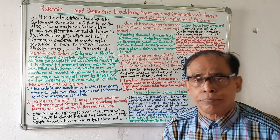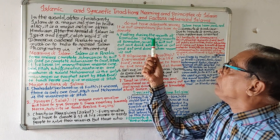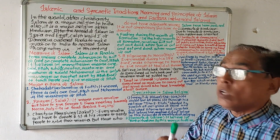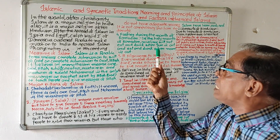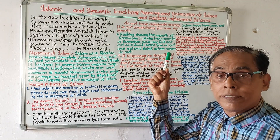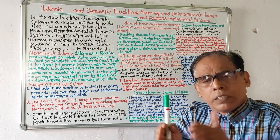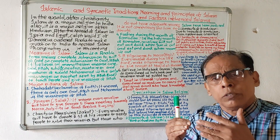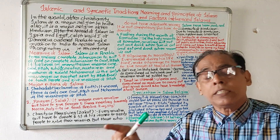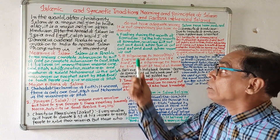Number four is fasting — another principle of Islam. Fasting occurs during the holy month of Ramadan. In this month, Muslims will not eat or drink when the sun is out, but they will eat and drink when the moon is out. So in the month of Ramadan, they undertake fasting.